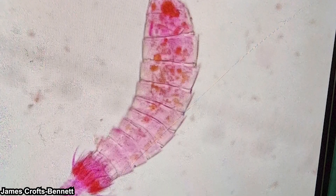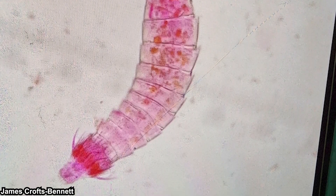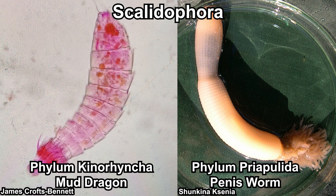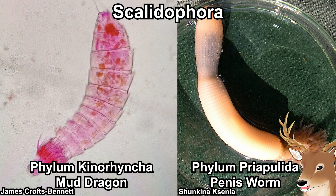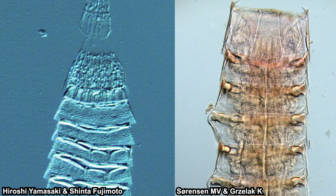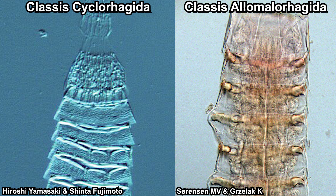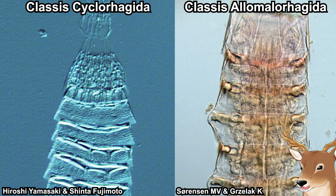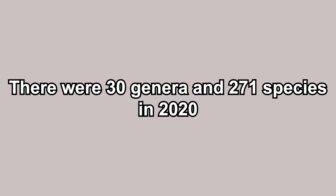Mud dragons are somewhat related to worms. To be precise, they are the sister taxa of Priapulida, the penis worm — yes, that is the name of those animals. This phylum is divided into two classes: Allomalorhagida and Cyclorhagida. This classification is largely based on molecular evidence, but also morphological synapomorphies. There are over 200 species of mud dragons.